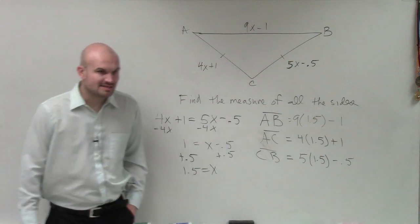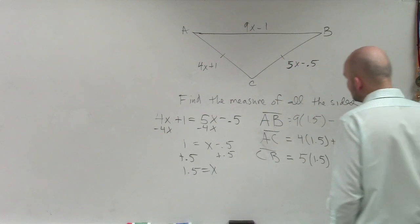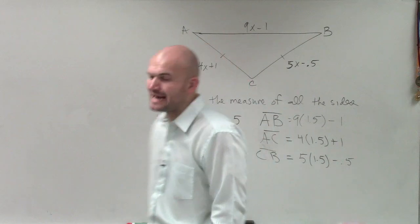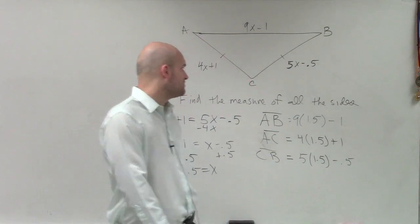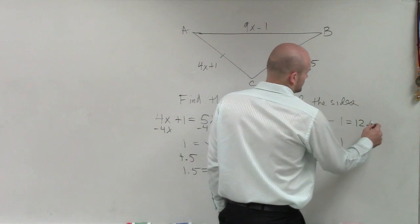So now I just need to do the work. So 9 times 1.5 is 4.5, right? Half of 9 is 4.5. So that'd be 13.5 minus 1 would be 12.5.